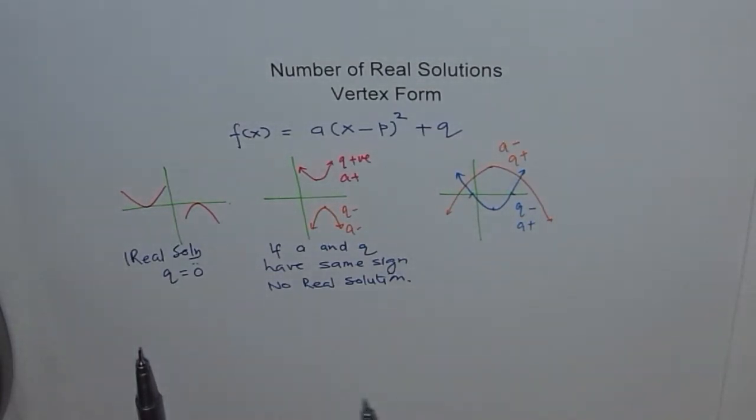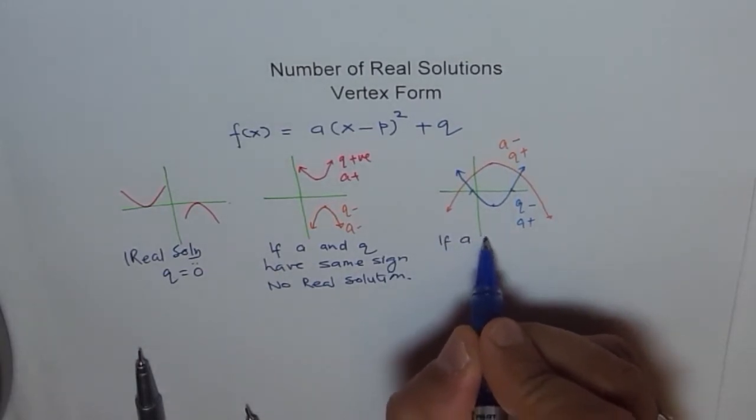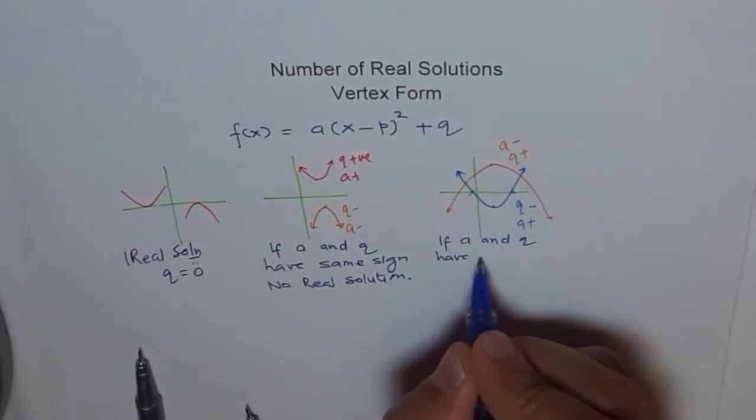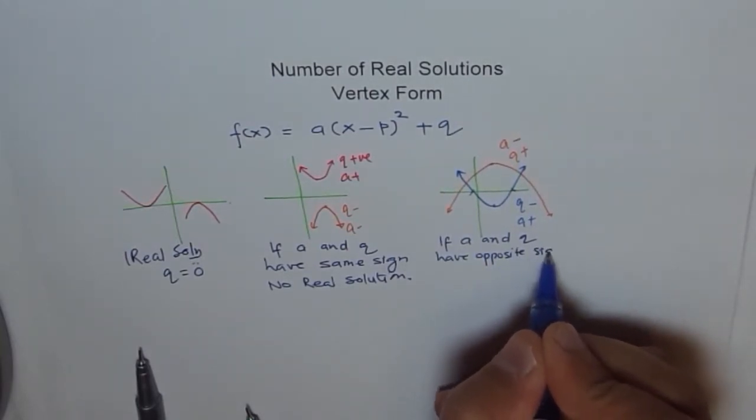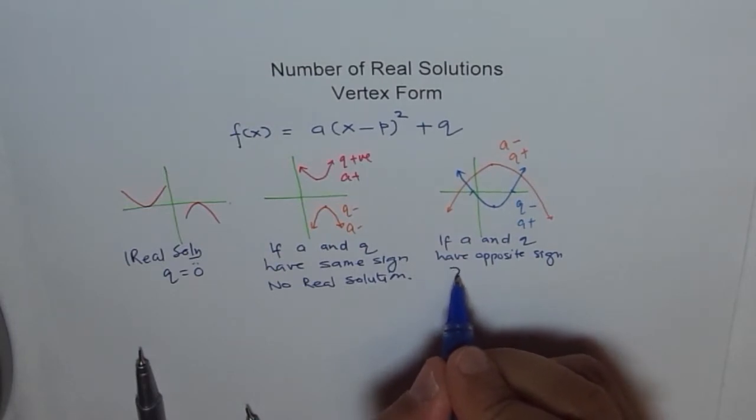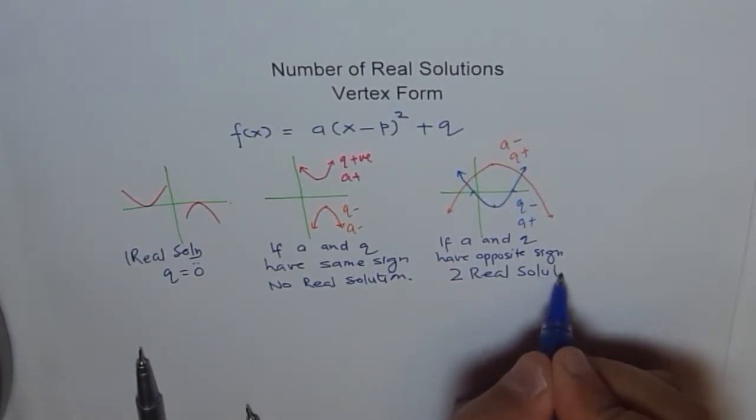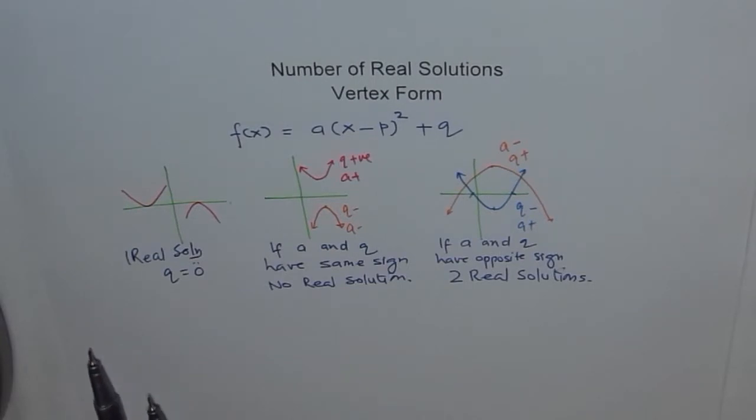This is extremely important observation. So if a and q have opposite sign, then what happens? We get two real solutions. Two real solutions.